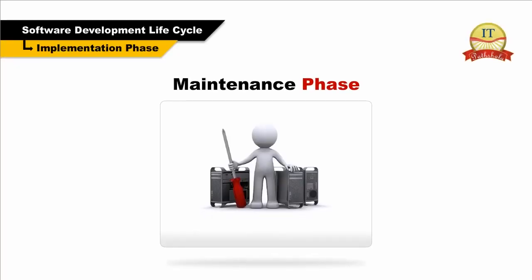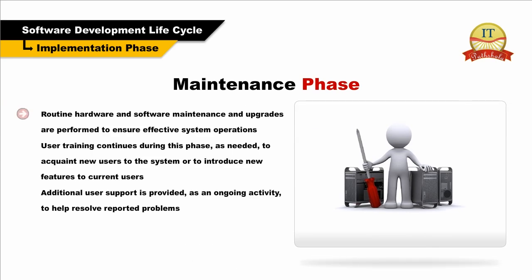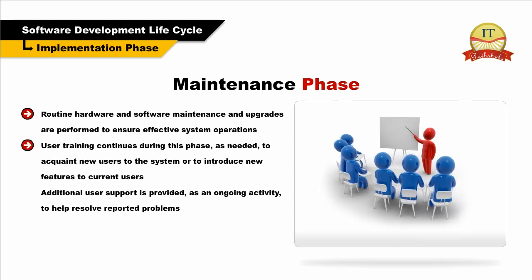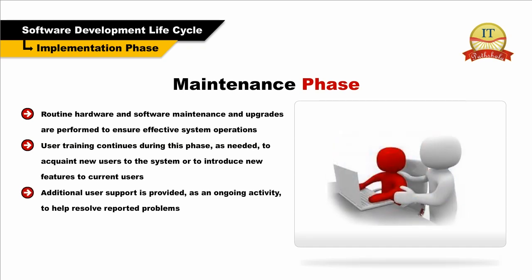Maintenance Phase: During this phase, the system becomes operational. The focus remains on ensuring that the user needs continue to be met and that the system continues to perform according to specifications. Routine hardware and software maintenance and upgrades are performed to ensure effective system operations. User training continues during this phase as needed to acquaint new users to the system or to introduce new features to current users. Additional user support is provided as an ongoing activity to help resolve reported problems.